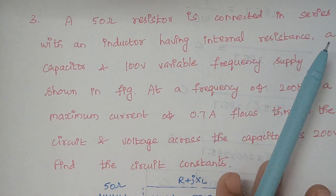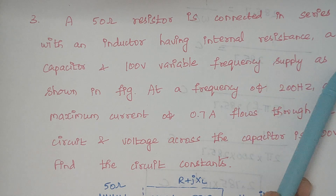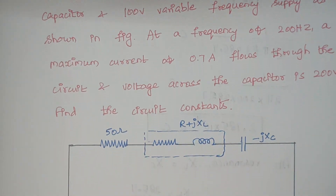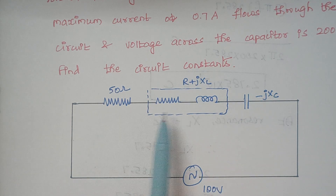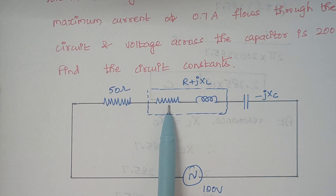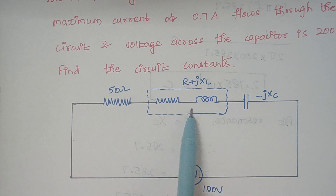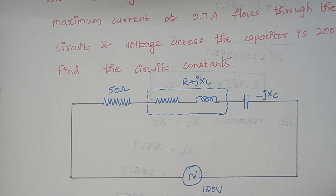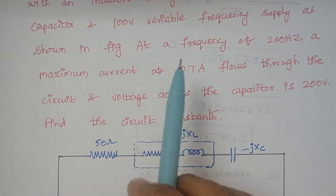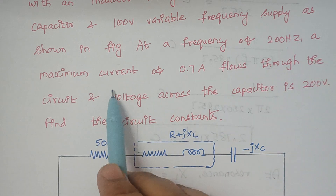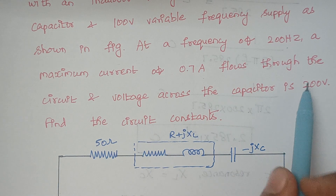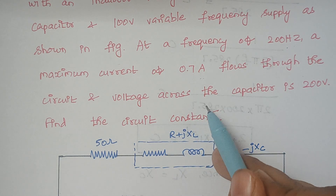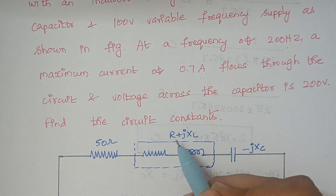The third problem: a 50-ohm resistor is connected in series with an inductor having internal resistance, a capacitor, and a 100-volt variable frequency supply. At a frequency of 200 Hz, a maximum current of 0.7 amps flows through the circuit, and the voltage across the capacitor during this time is 200 volts. Find the circuit constants L and C.